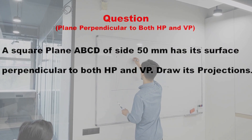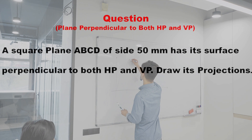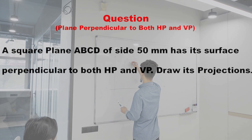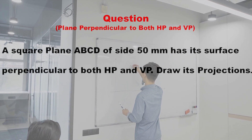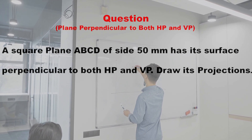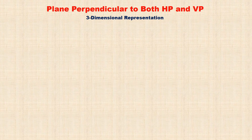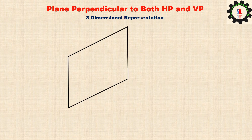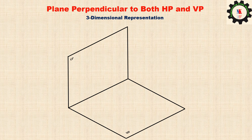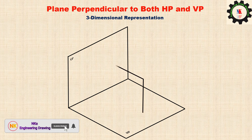A square plane ABCD of side 50 mm has its surface perpendicular to both HP and VP. Draw its projections. Now let us see the square plane in three-dimensional representation. Now represent the square plane surface perpendicular to both HP and VP.